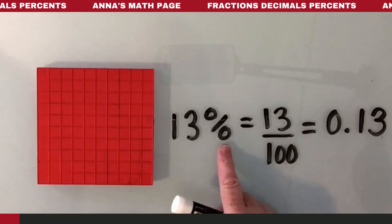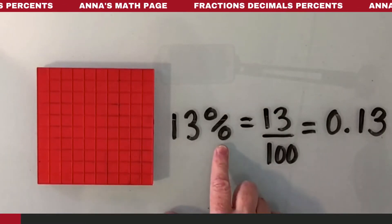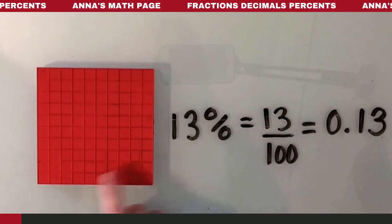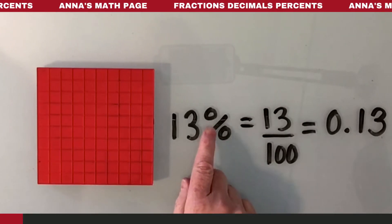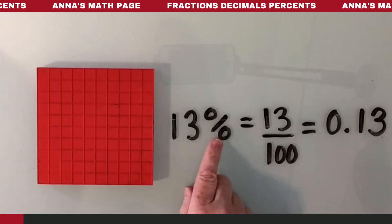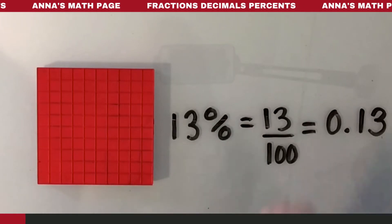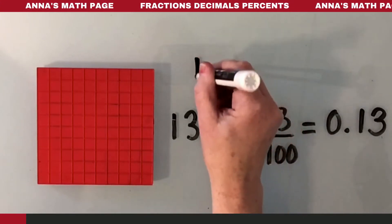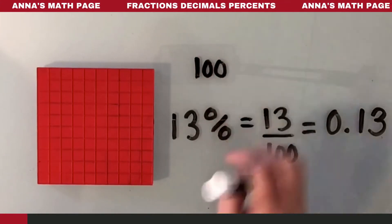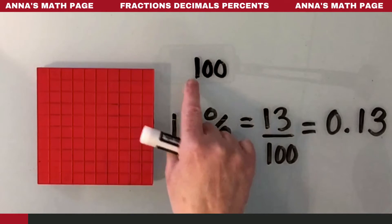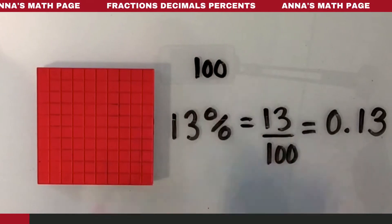Percent means out of 100. Can you see there's a one, a zero, zero — percent, right? 100. There's the one, there's the two zeros: 100.